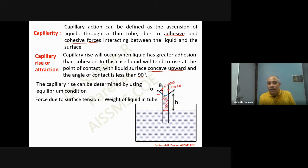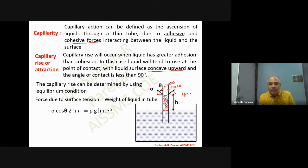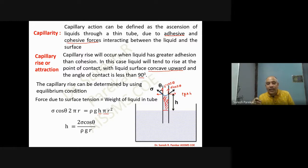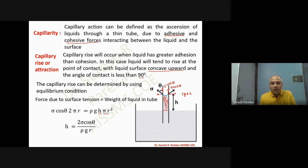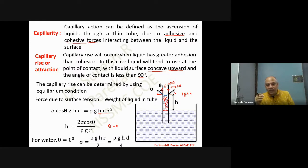The vertical component of surface tension is sigma·cos(theta), acting along 2·pi·r or pi·d. The horizontal components cancel. Setting sigma·cos(theta)·pi·d equal to the weight of liquid, which is rho·g times volume (pi·r²·h), we derive capillary rise h equals 2·sigma·cos(theta) divided by rho·g·r. For water in a glass tube, theta is zero. This gives sigma equals rho·g·h·r divided by 2, or in terms of diameter: sigma equals rho·g·h·d divided by 4.